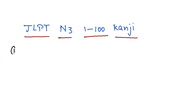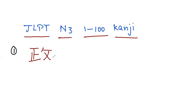Our very first kanji is the kanji for politics and government. It has nine strokes. This is the kanji for politics.